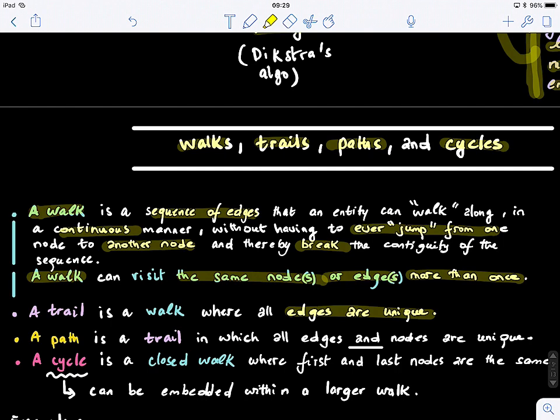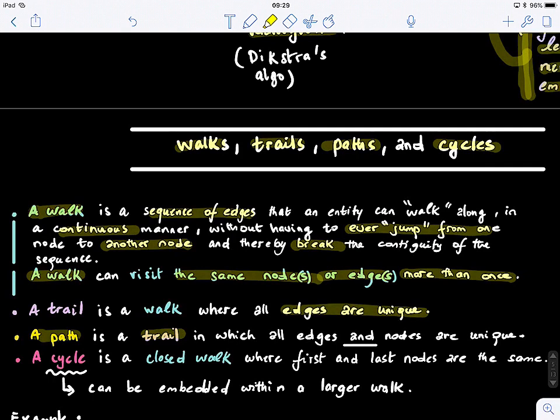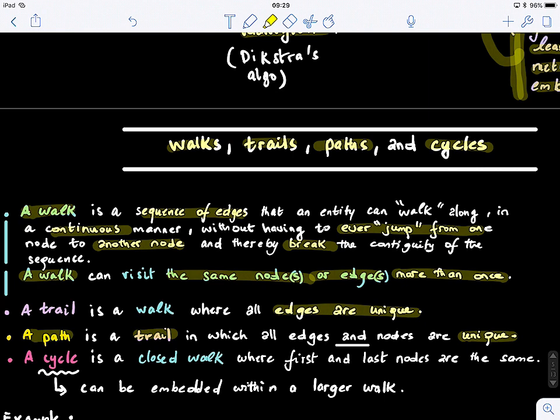Now, a path is a trail in which all edges and nodes are unique. It's a special trail where the nodes also are visited only once.